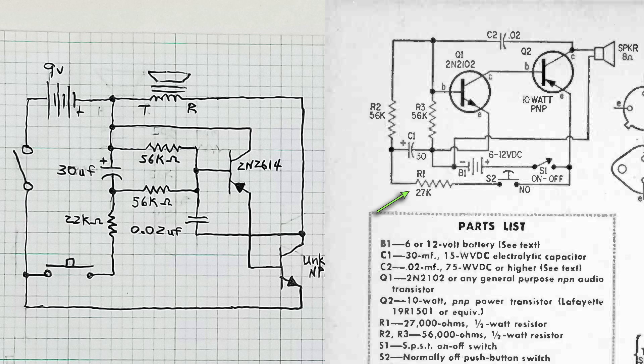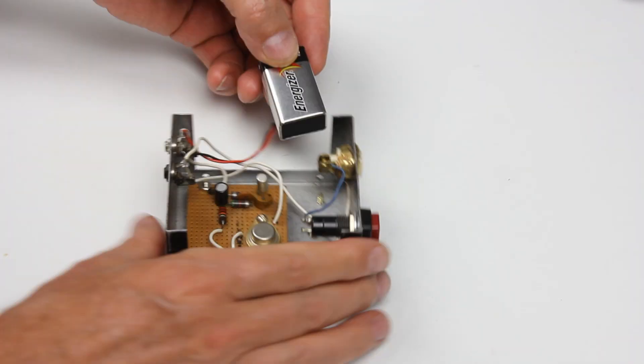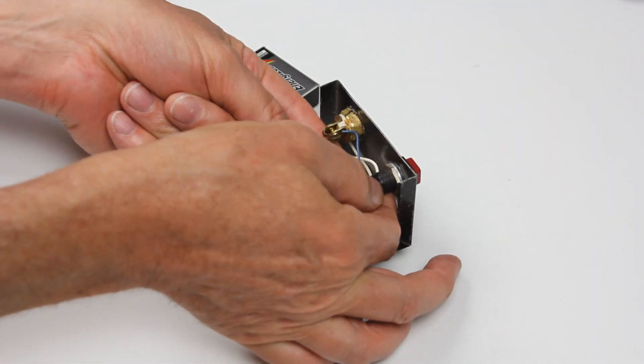As for the 27k ohm resistor being a 22, when you're harvesting your parts from old electronics and grab bags bought at ham radio meets, you take the closest thing you can find. Now that we have a diagram of the circuit and I've figured out where it came from, let's see if it works.